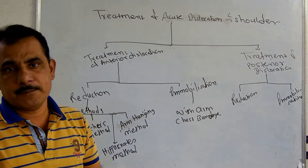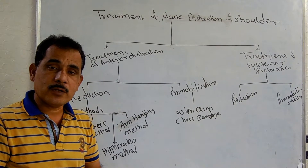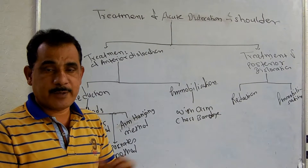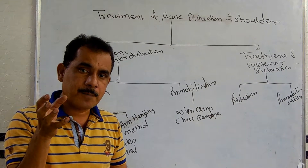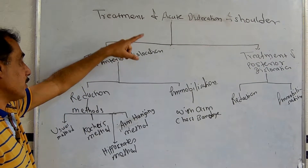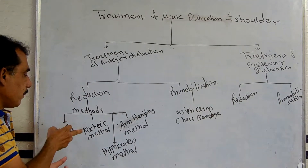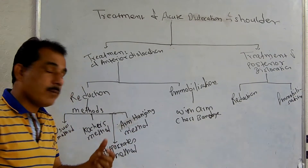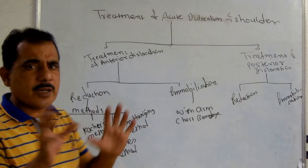Reduction means the correction of the displacement — bringing the displaced part back to its place. The reduction of the acute dislocation of the shoulder can be carried out by any one of four methods: first is the usual method, second is Kocher's method, third is Hippocrates' method, and the fourth is the arm hanging method.